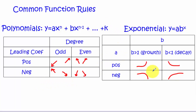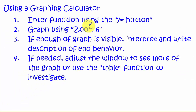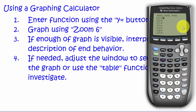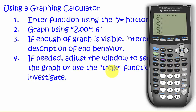Using the graphing calculator is easiest to review with examples. First, press the Y= button and enter your function into Y1. Then press Zoom 6 to get a standard coordinate plane, which goes from negative 10 to positive 10 on both x and y axes. Most of the time the graph visible on that standard view will let us interpret and write the end behavior. On some problems we may need to adjust the window, and we may also look at a table of values using the table function.